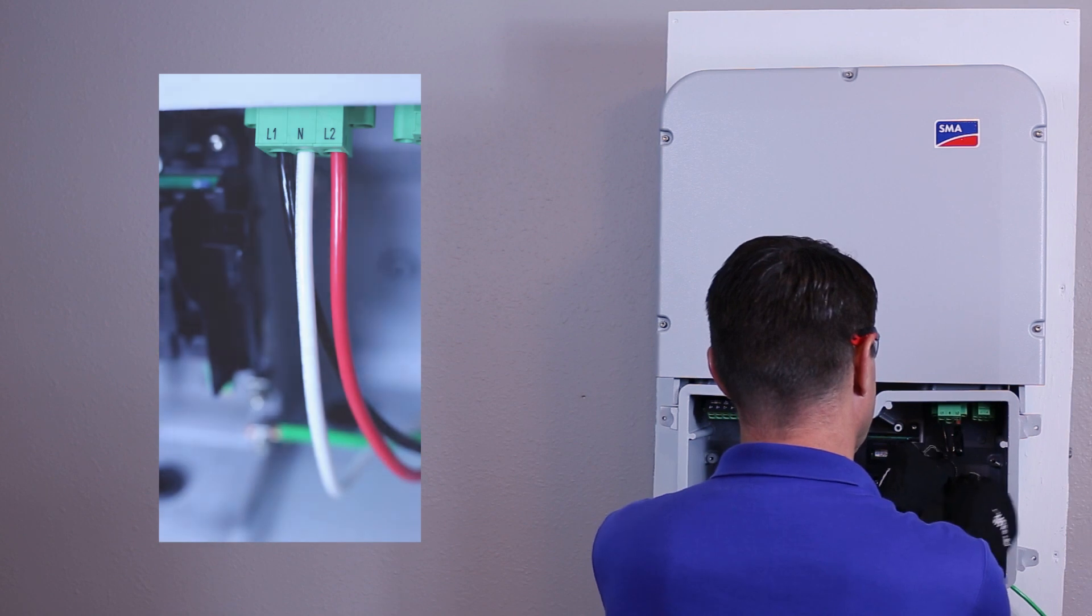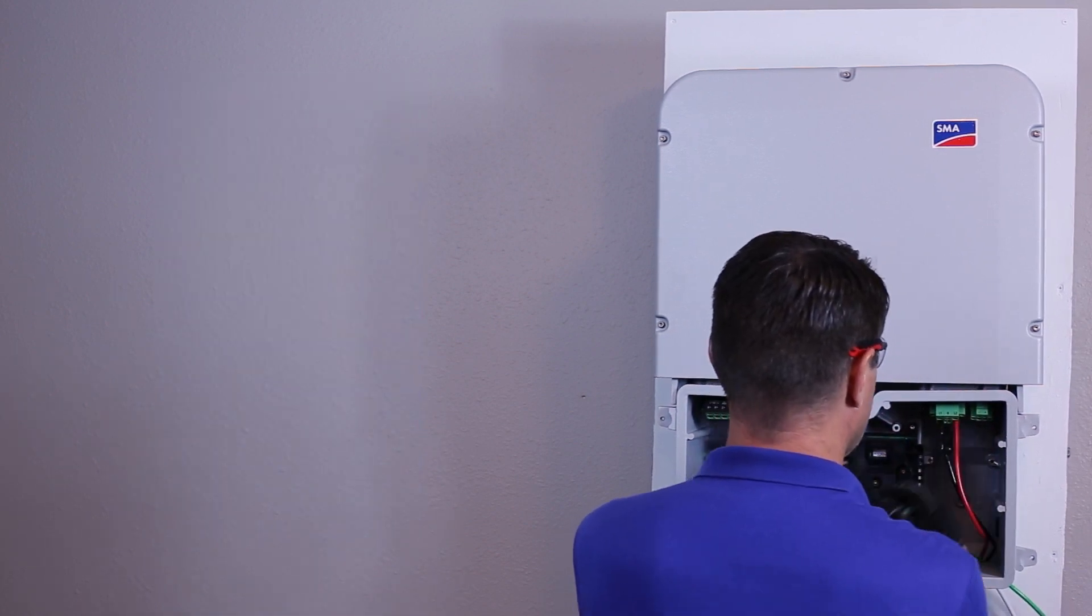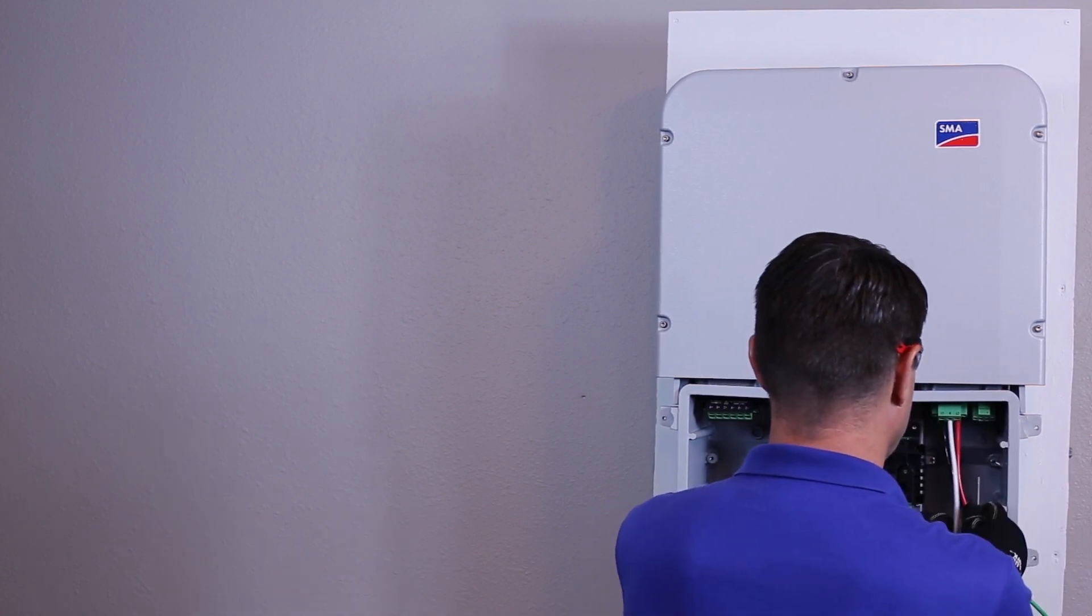Insert AC line 1 and line 2 conductors and, if appropriate, neutral. If installing line to line on a 208 volt or 240 volt delta service, remember to select the correct grid code during commissioning.